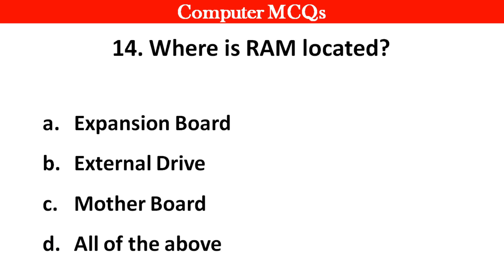Next question. Where is RAM located? Options A: Expansion board, B: External drive, C: Motherboard, D: All of the above. Right answer is option C: Motherboard.